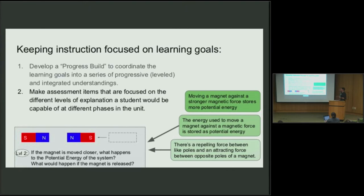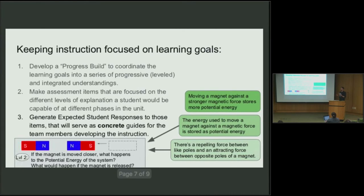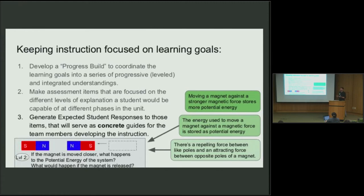Because you now have that concrete example of a student actually doing something, you can use it in the development process. It turns out it's a lot easier for a developer choosing activities to answer the question: 'Is this activity going to help my student answer this question?' That is easier than: 'Is this activity going to make them learn these things?' That extra step of interpretation was leading to the disalignment.